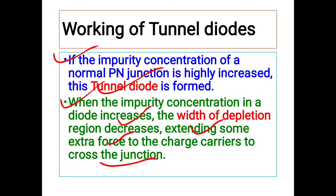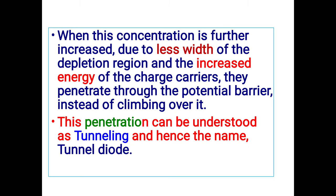As the depletion region decreases, there is more chance of free charge carriers to cross the junction because they get extra force due to the narrow depletion region. When the concentration is further increased, due to the narrow depletion region and increased energy of the charge carriers, they penetrate through the potential barrier instead of climbing over it. This penetration of electrons and holes can be understood as the tunneling effect, and due to this tunneling effect the diode is named as tunnel diode.